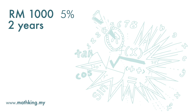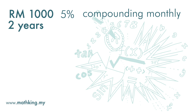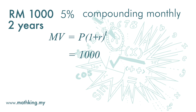Next question: what if we put money in the bank for two years, compounding monthly? Again, the principal is one thousand and the interest rate is five percent. Remember that interest is always quoted per annum, that is per year. The matured value is principal times one plus interest rate to the power of time period.